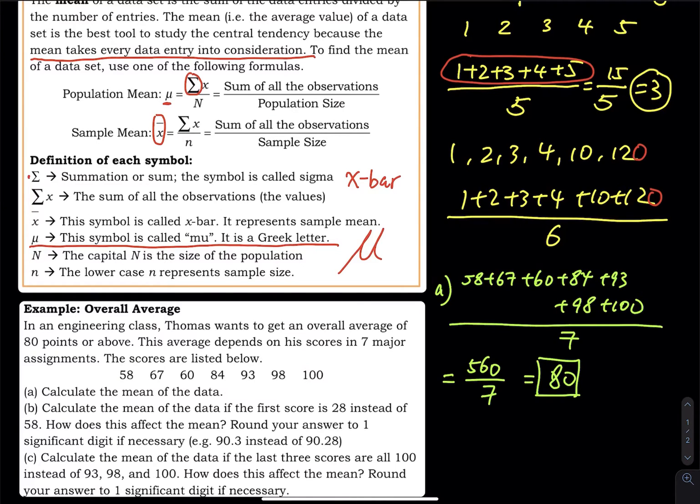If these scores are correct, his average is 80. You encounter this problem all the time: what if I get a lower score, or a better score next time? Does that affect the average? Yes. This 80 depends on these seven scores. If you change one score, you change the sum, and the sum changes the mean.